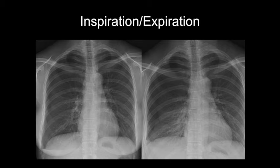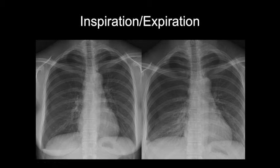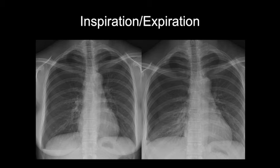When you're imaging a pneumothorax — air in the pleural space — you can do expiratory views to make the pneumothoraces look bigger and more obvious. On the left here we have a normal inspiratory view, and there's a pneumothorax on the right. You have air between the visceral pleura that outlines the lung and the parietal pleura on the chest wall. To diagnose a pneumothorax, you need to see a pleural line and absent lung markings distal or peripheral to that pleural line.